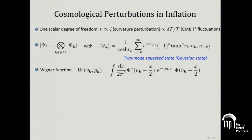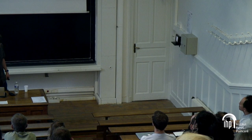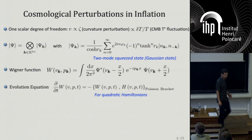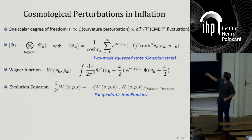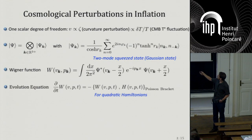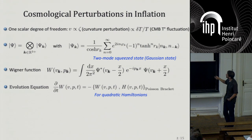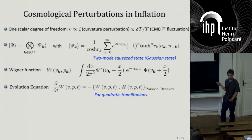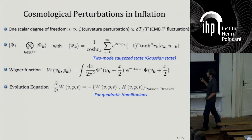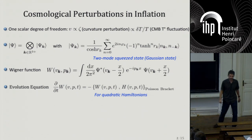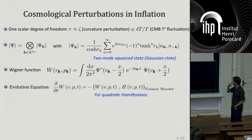One can derive a time evolution equation for W. Writing dW/dt, using the Schrödinger equation, one obtains that dW/dt is just given by the Poisson bracket between W and H. This holds for quadratic Hamiltonians, and here the Hamiltonian is quadratic because I'm working at linear order in perturbation theory.